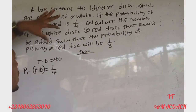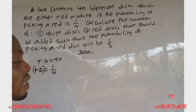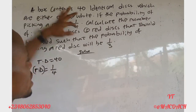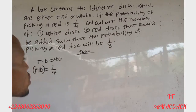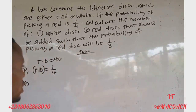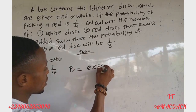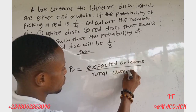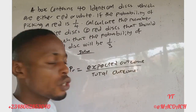Question one asks us to calculate the number of white disks. Now, the number of red disks inside the bag is not given, so before we can find the white disks we must first find the total number of red disks. Remember the probability formula: probability equals expected outcome over total outcome.